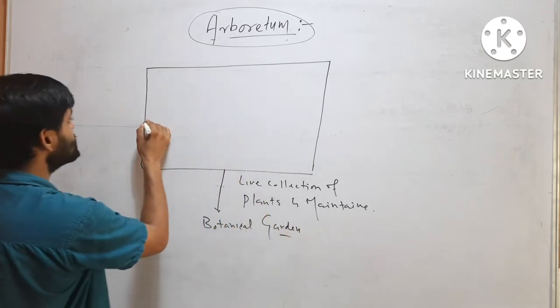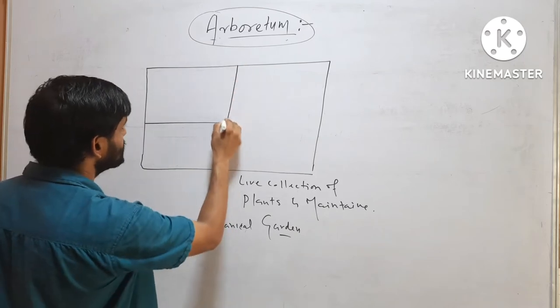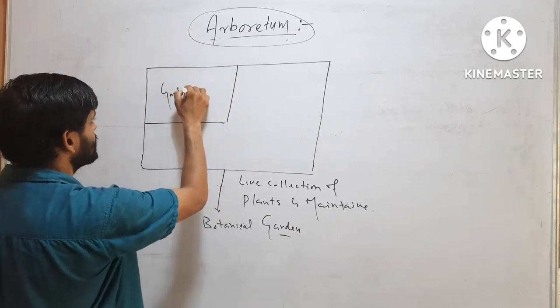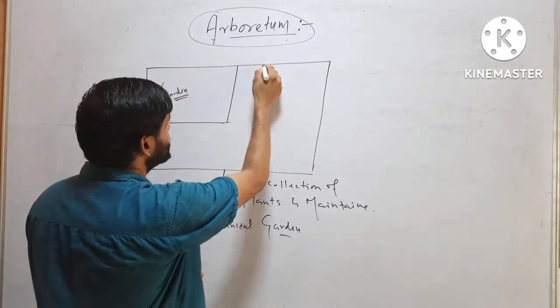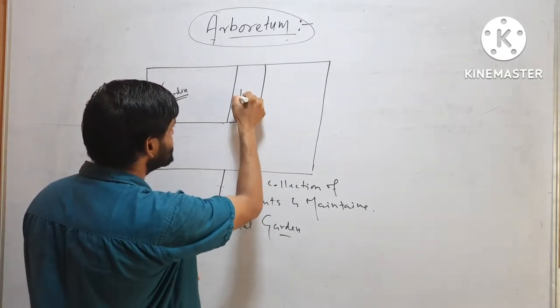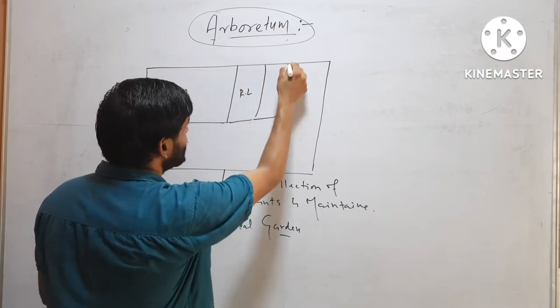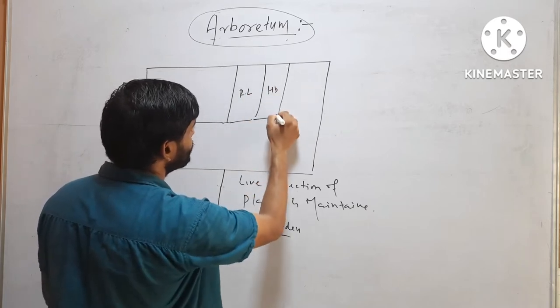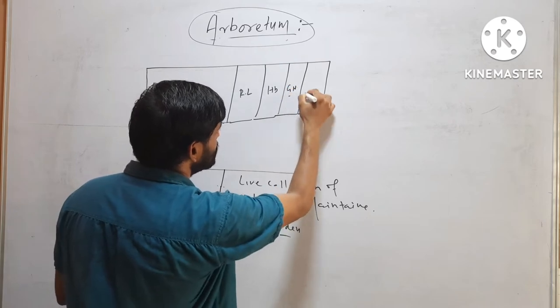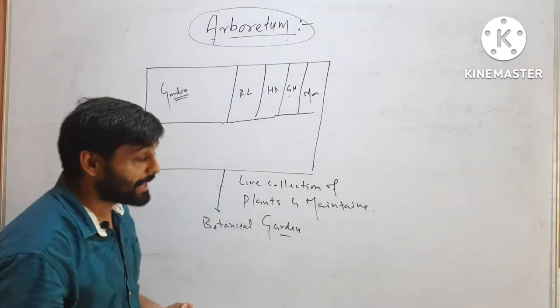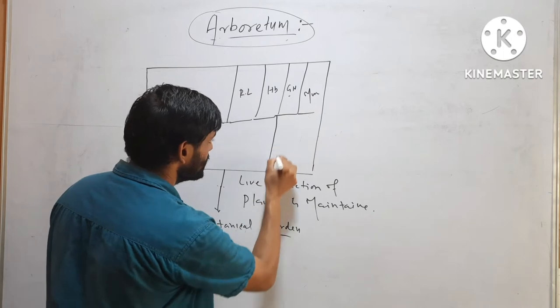In that place, you will find a big garden which has different types of plants. You will also find there a research laboratory, a herbarium, greenhouse, museum and also library.